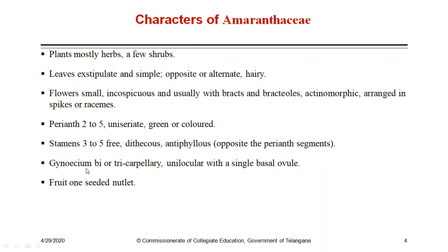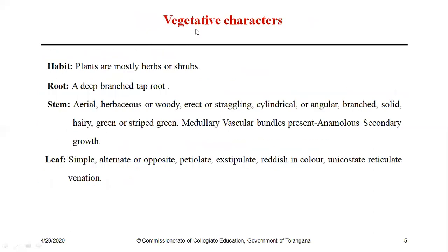The gynoecium is usually bicarpellary — two carpels are fused, called syncarpous — and unilocular with a single basal ovule. That ovule is campylotropous. The fruit is a one-seeded nutlet, also called a pyxidium.